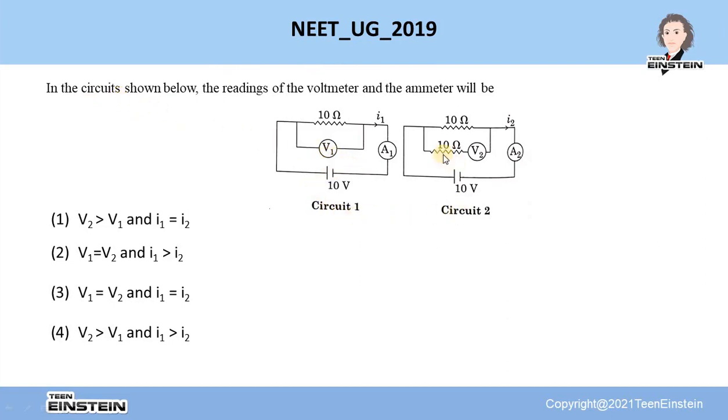Two circuits are shown in this figure. And you have to find out the readings of the corresponding voltmeter and ammeter. There are four options given over here. You have to find out the correct one.